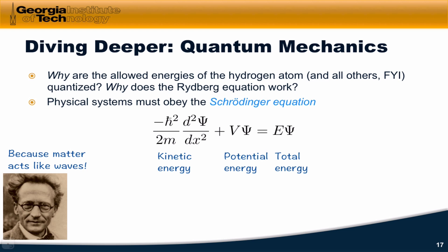And in particular, the Schrödinger equation says that if you have a term for the kinetic energy, and you add to that a term for the potential energy, that must be equal to the total energy.